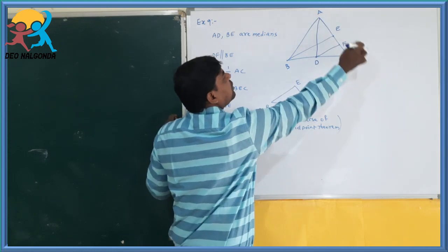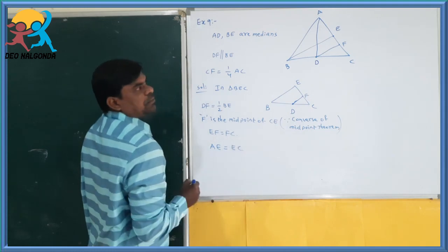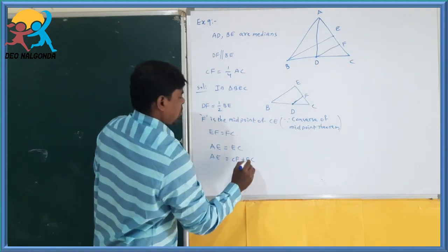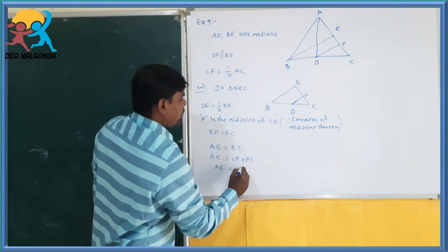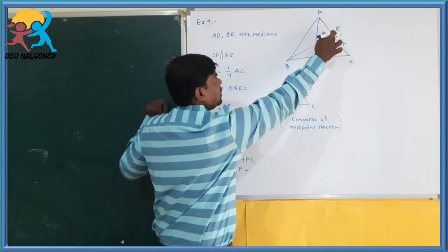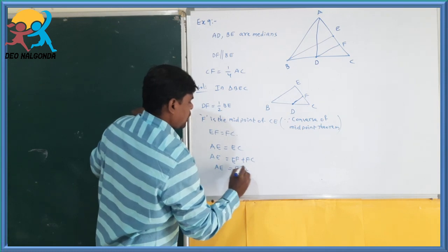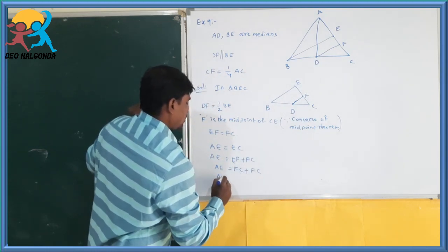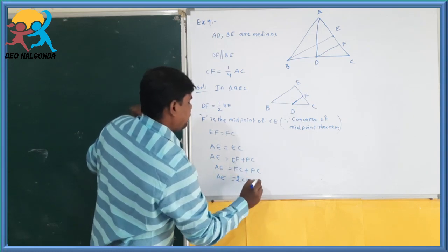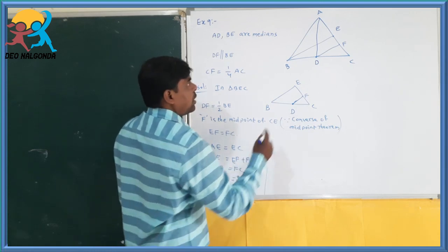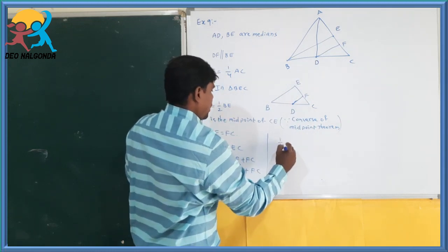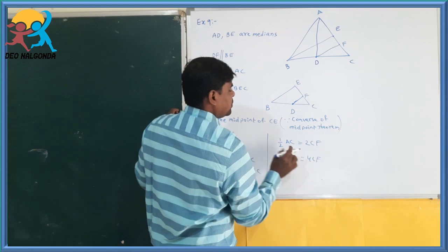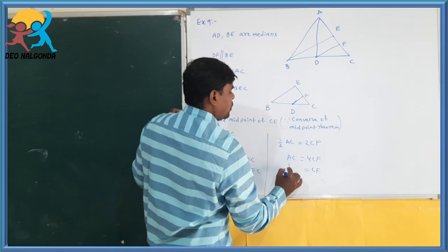We know that E is the midpoint of AC, so AE equals EC. We can write EC as EF plus FC, which is FC plus FC, so EC equals 2CF. Since AE equals half of AC, we replace AE with half AC, giving us half AC equals 2CF. Therefore AC equals 4CF, and CF equals one-fourth of AC. Like this we have proved.